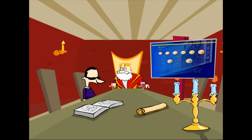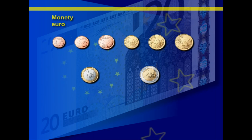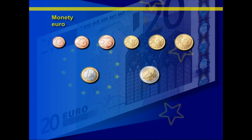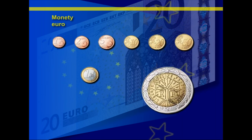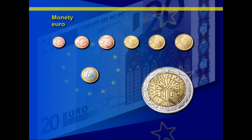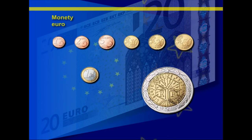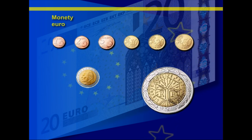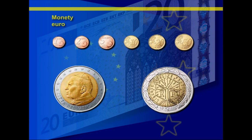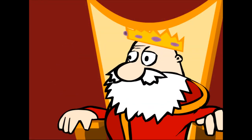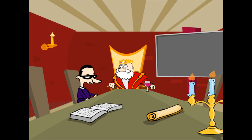A co jest na rewersie monet? Na rewersie są symbole związane z krajami, z których monety pochodzą. Na przykład na rewersie monety francuskiej jest symbol drzewa, będący metaforą życia, ciągłości i wzrostu. Symbol ten wpisany jest w sześciokąt otoczony francuskim napisem Liberté, égalité, fraternité, czyli wolność, równość, braterstwo. A na rewersie monet watykańskich jest podobizna ojca świętego Jana Pawła II. Czy ja mógłbym dostać takie okazy do ręki? A pewnie, skoczę tylko do kantoru i kupię, choć mogę mieć kłopot z drobnymi. Postaraj się, ministrze, postaraj się.